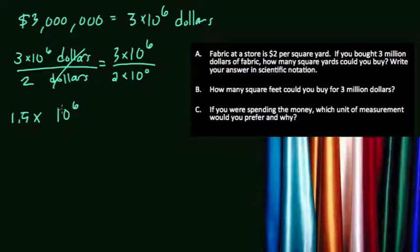This means we can buy 1.5 times 10 to the 6th square yards of fabric. That makes sense—if you imagine 1.5 million doubled, you get 3 million, the total amount of dollars you have to begin with.